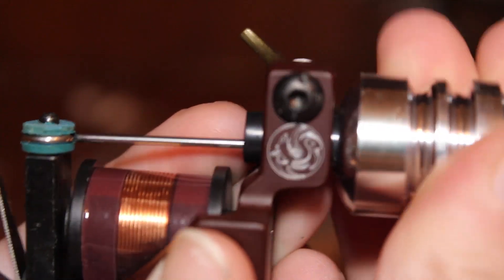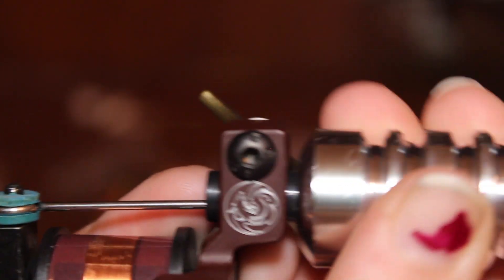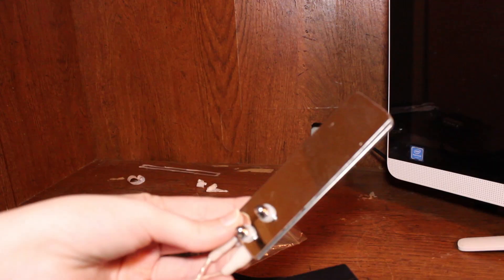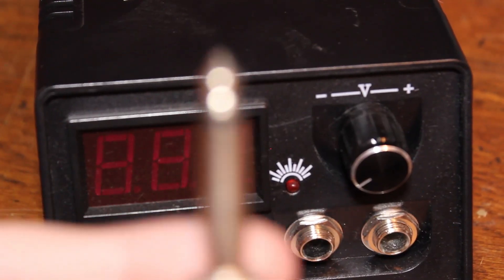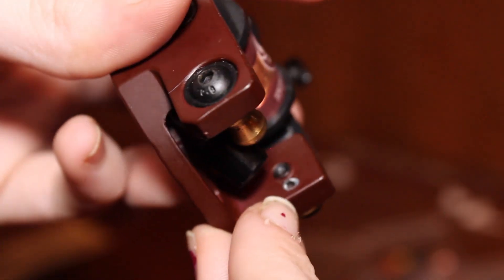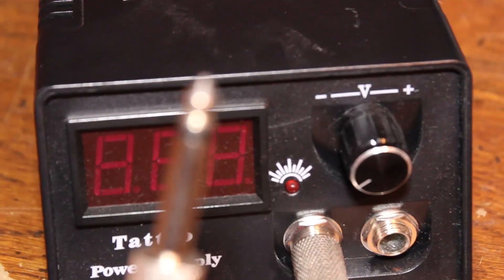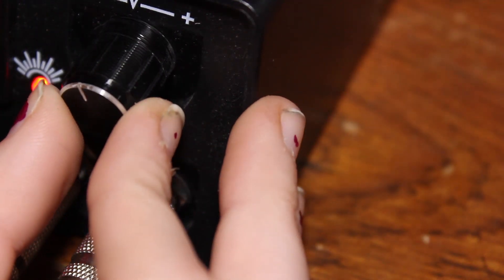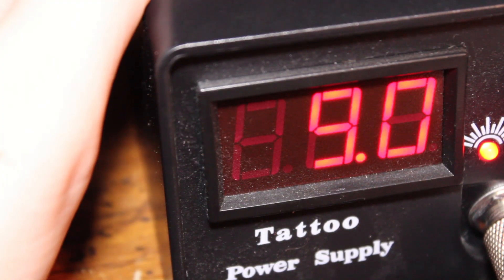You want to make sure you adjust your tube so that the needle is resting right at the edge of it. Then you can tighten it. Now we connect our power supply by just plugging the box into the wall. Next we plug our foot pedal into the box and clamp these two metal pieces onto these small holes in the tattoo machine. Now we turn our power supply on. For a lining machine, we want to keep it right around 9 volts.